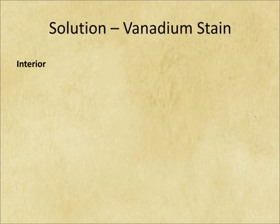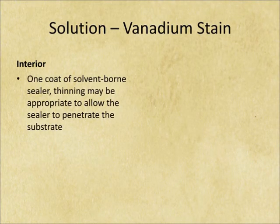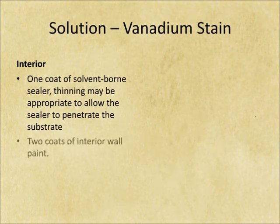You're not likely to find vanadium stain in interiors except for bathrooms, showers, and wet areas. For aesthetic reasons you can't use high build membrane paint in these spaces, as they tend to have an unsightly textured profile. So for interiors, first coat use a solvent-based sealer thinned to get into the substrate, then finish with two coats of interior latex paint.